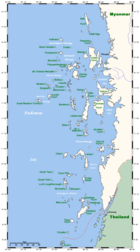Continental fragments correspond to land masses that have separated from a continental mass due to tectonic displacement. The Farallon Islands off the coast of California are an example.